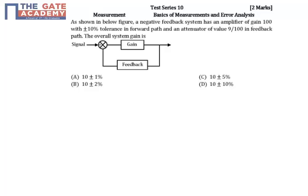In the given problem, he has given an amplifier with negative feedback and the feedback value, called the attenuator value, and also the amplifier gain. But if you see, the amplifier gain is having an error of 100 plus or minus 10 percent tolerance.